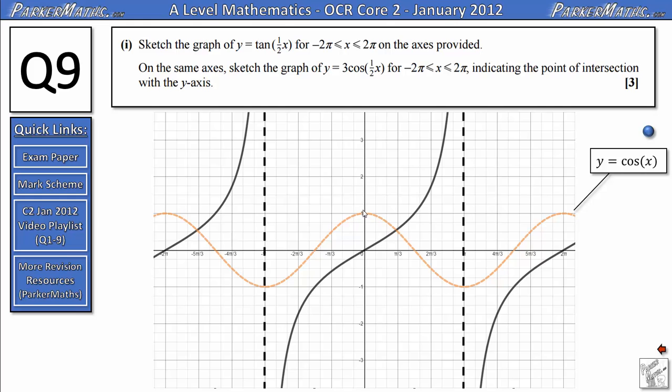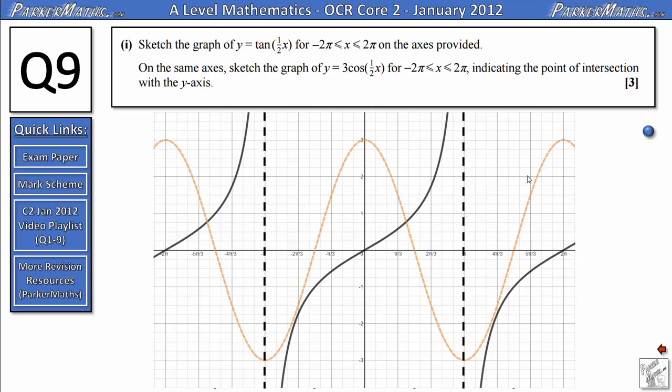That's going to have the effect of stretching it in the y direction. So instead of going between 1 and -1, it's going to go all the way up to 3 and all the way down to -3. But the general shape of the graph will stay the same, and the points it crosses the axis will also stay the same at this point. So it will look something like this.